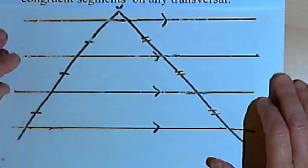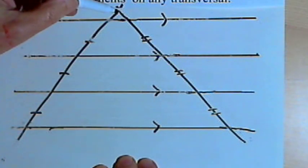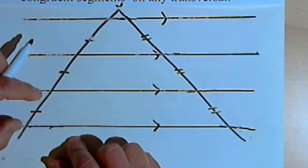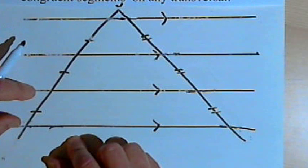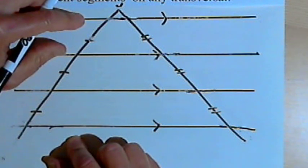Here's what the theorem means. I've got four parallel lines here and I've drawn a transversal through those lines. So those lines cut off segments on that transversal, and I know those segments are congruent. I know they're exactly the same length.